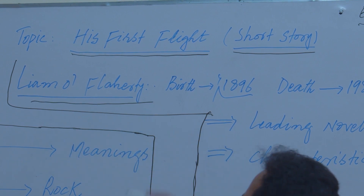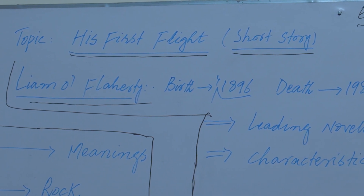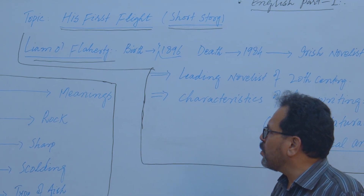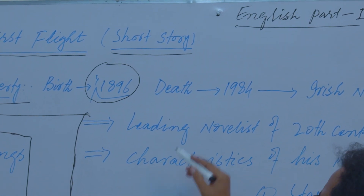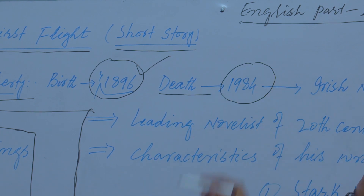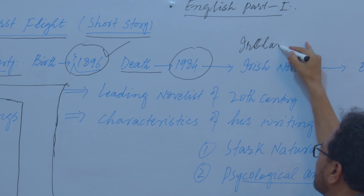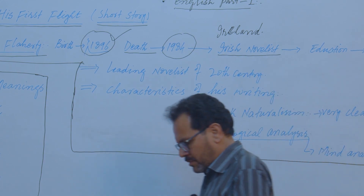The writer of this story is Liam O'Flaherty. Let us understand a little about the writer — when he was born, when he died, and where he was from. Liam O'Flaherty was born in 1896 and he died in 1984. He was born in Ireland, which means he was Irish.